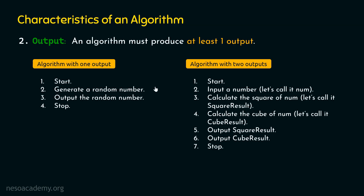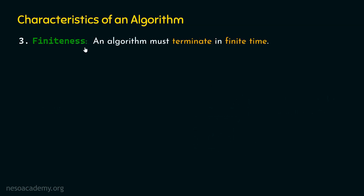It is possible for an algorithm to generate more than one output, but at least one output must be present. Now let's move to characteristic number three, which is finiteness. An algorithm must terminate in finite time. If an algorithm takes forever to run, we do not consider it a valid algorithm — it is invalid. In order to say that an algorithm is valid, it must terminate in finite time.